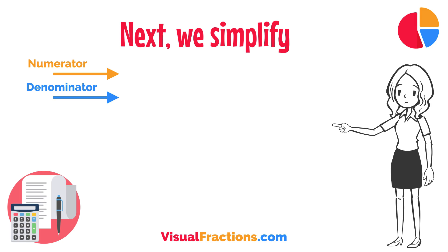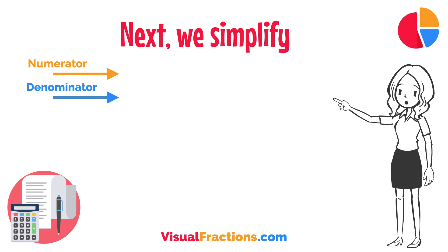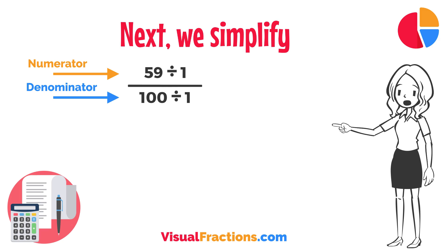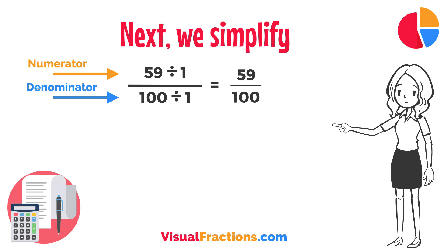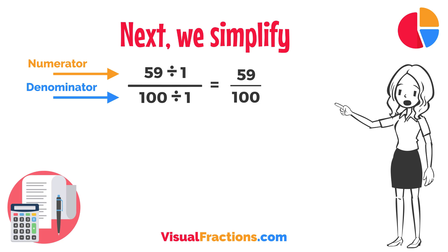Next, we simplify. Both the numerator and the denominator in 59 one-hundredths are divisible by 1, the greatest common divisor. So, 59 one-hundredths is in its simplest form and cannot be further simplified.